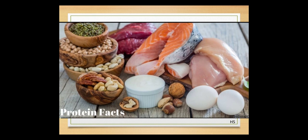Protein-rich foods include eggs, fish, and meat. But it is not correct to say only non-vegetarian food contains protein — vegetarian foods like leafy vegetables, beans, maize, and grains also provide sufficient amounts of protein.